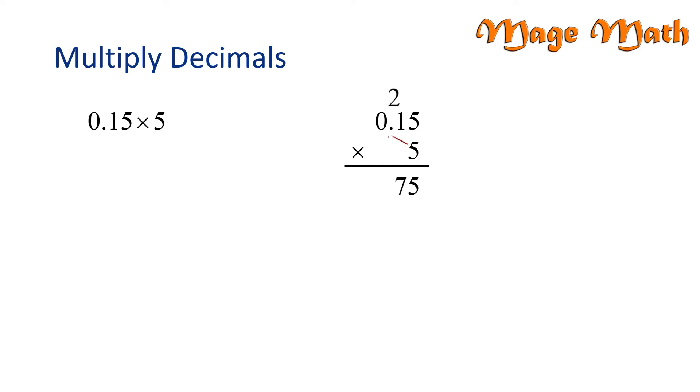Next, 5 times 0, well that's 0. Our final step is to decide where the decimal point goes. Since the first number has 2 decimal places representing hundredths, our answer will have 2 decimal places as well. So we move 2 places to the left and then we place the decimal point between the 0 and the 7. This means 0.15 times 5 is 0.75.